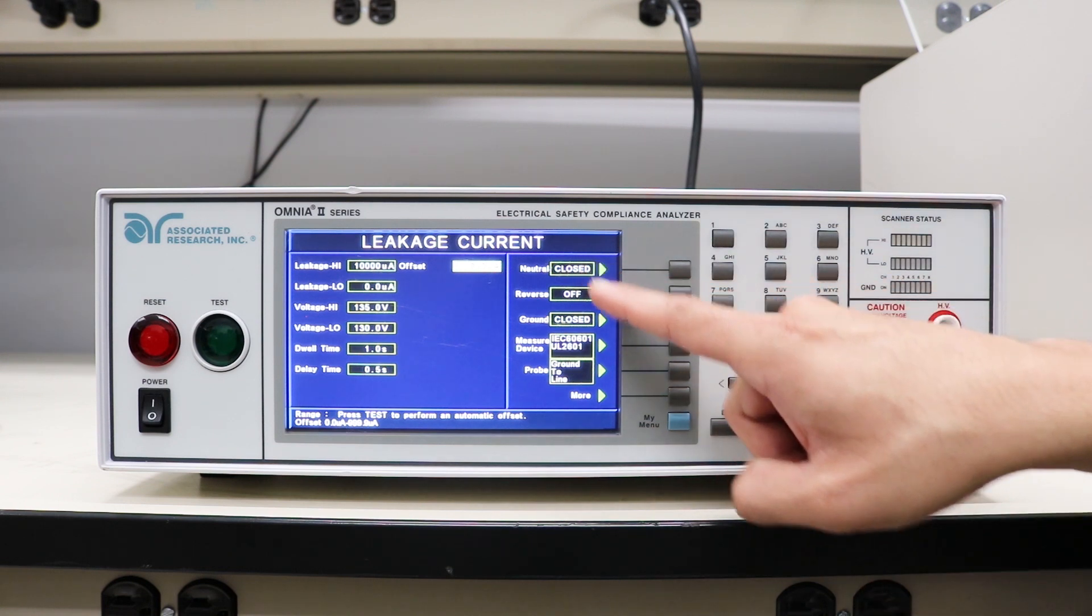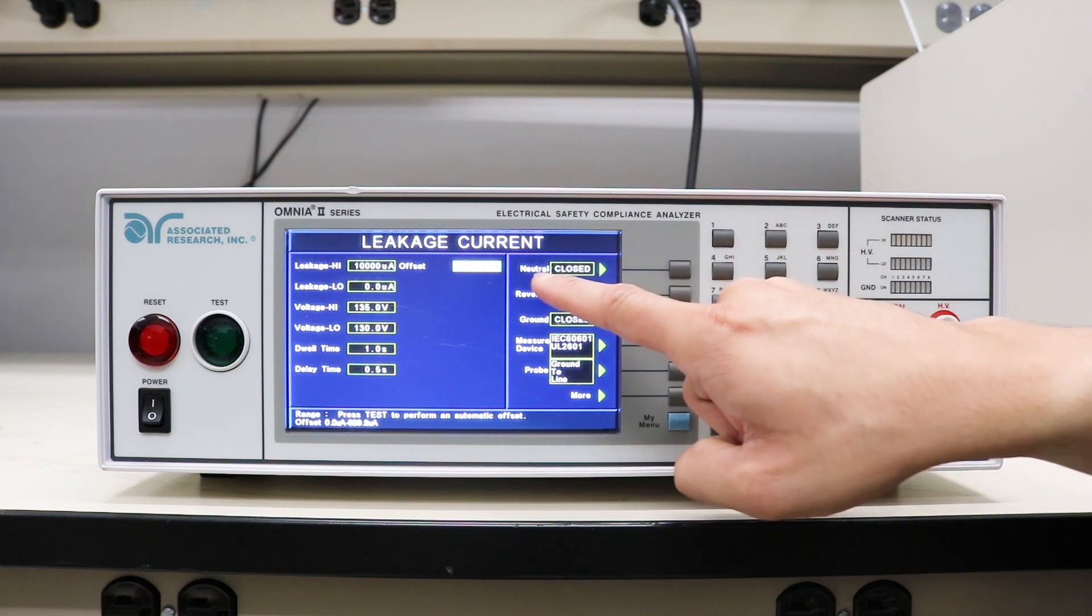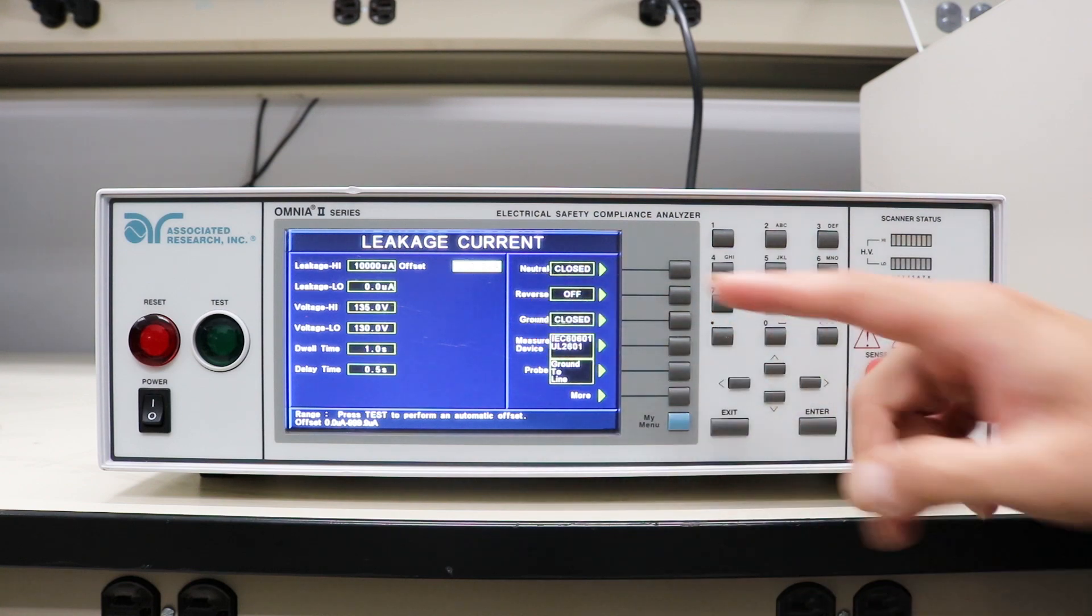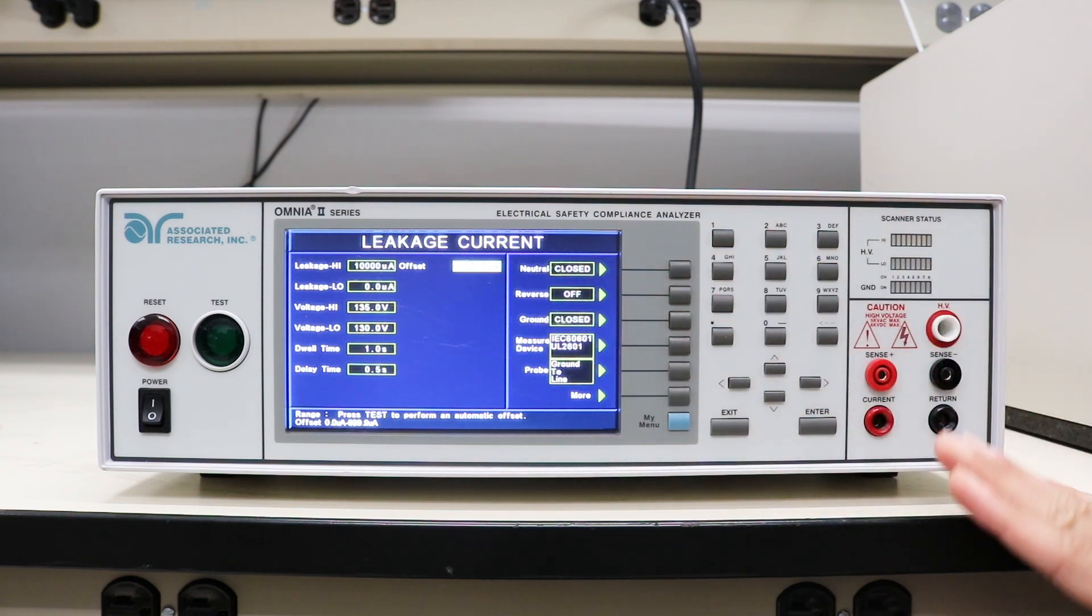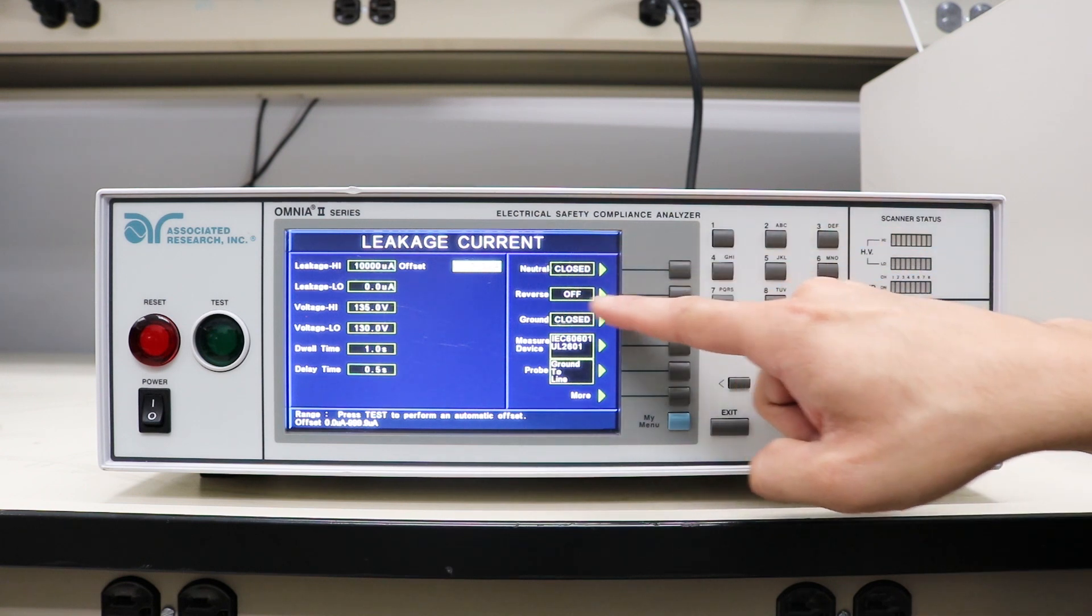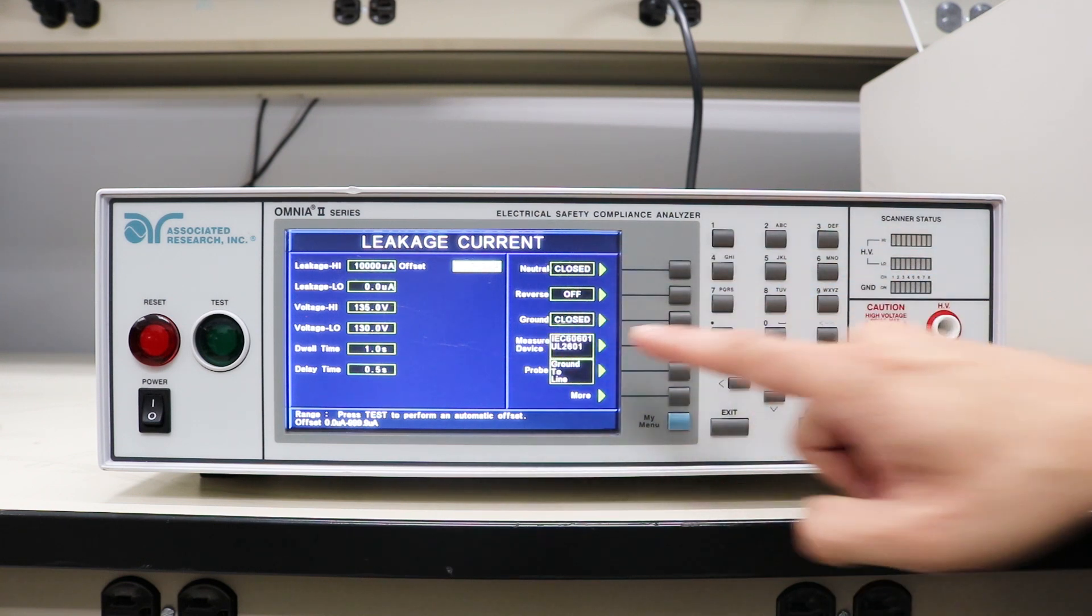On the right side of the screen are the three fault conditions: neutral, reverse, and ground. In the first test step we're going to leave everything as normal. So neutral is closed, reverse polarity is off, ground is closed.